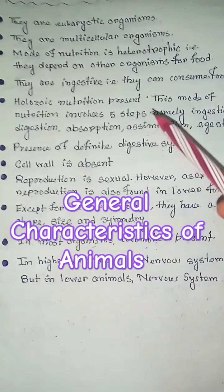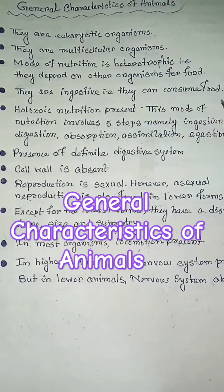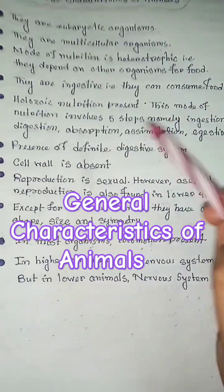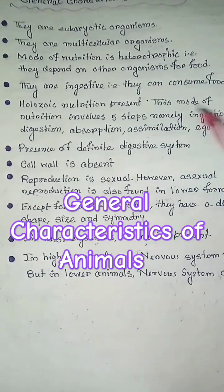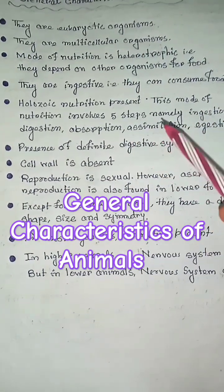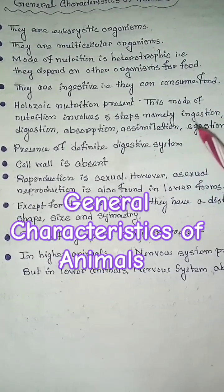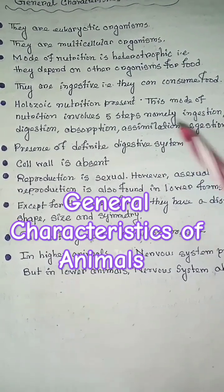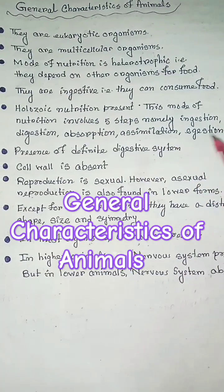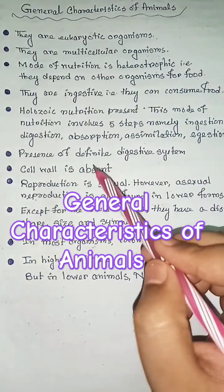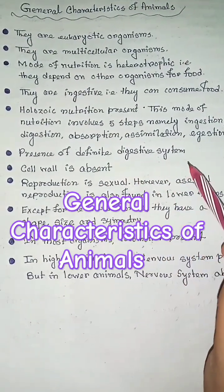Animals are ingestive — they can consume food, and holozoic nutrition is present. This mode of nutrition involves five steps: namely, ingestion, digestion, absorption, assimilation, and egestion. There is also the presence of a definite digestive system.